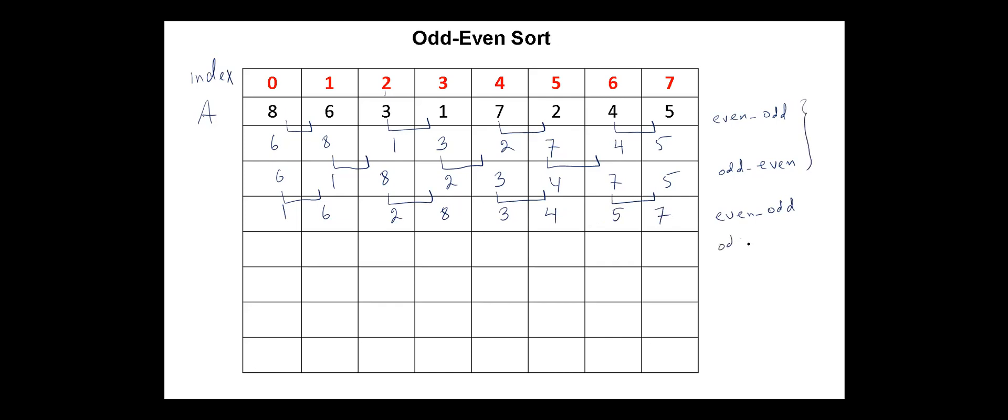And again, we start with odd-even pairs. So we compare these two elements. We have to swap them. Next eight, three. We swap them. Next four, five. They are in their places.